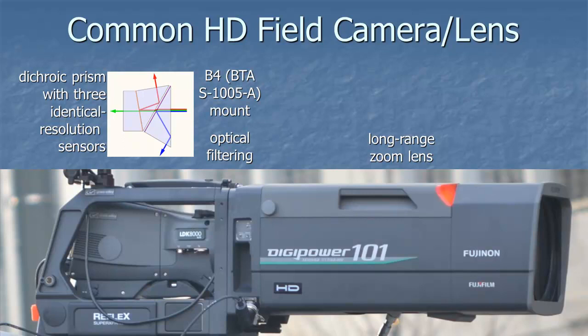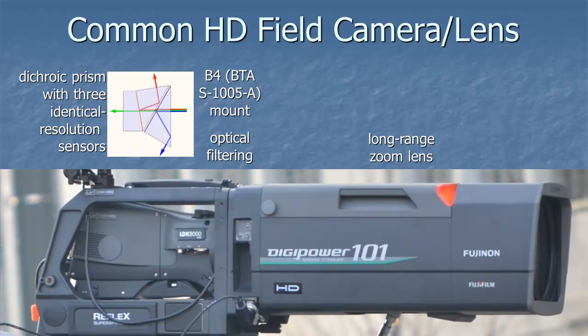This is a common high-definition camera and field lens. It's got a prism with three sensors on it. It's got an extremely well-defined mounting and interface between the optics of the lens and the sensors. In fact, the sensors are at different depths for the different colors. And there's optical filtering that matches what the sensors do, and then we have a long-range zoom lens.